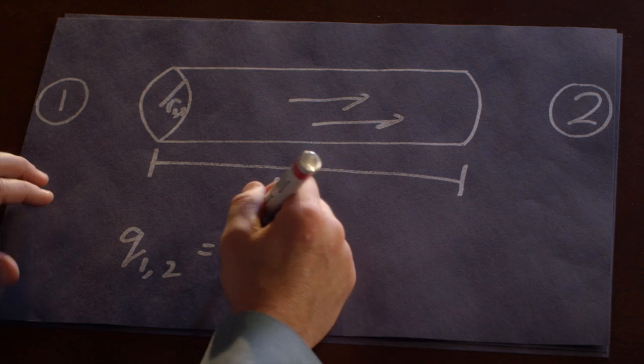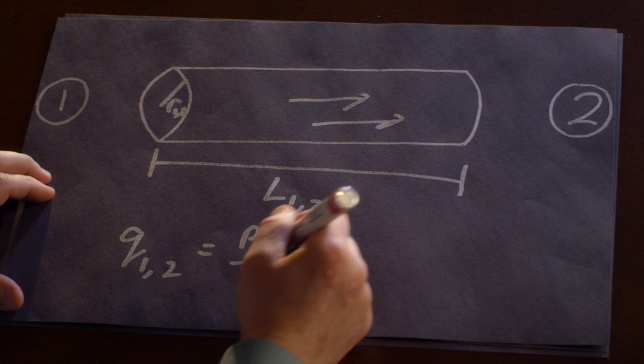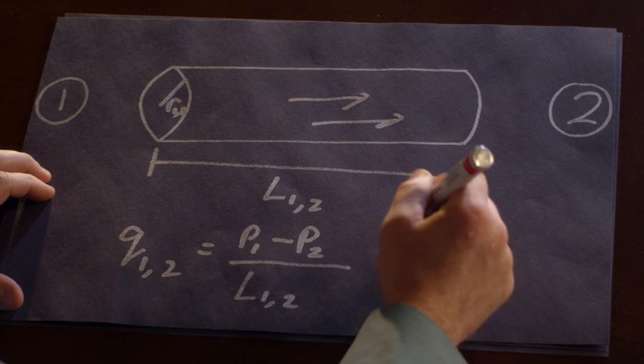That is, what is the difference between the pressure at node one and the pressure at node two? And the pressure drop is that difference divided by the length of the pipe.